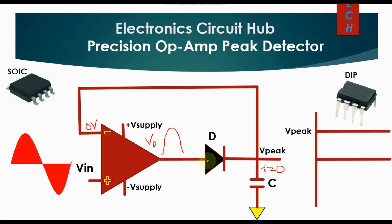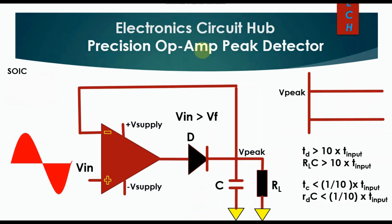This diode conducts and it behaves like a short circuit, and this capacitor will get charged up to V-peak of your input signal. The charging time of this capacitor depends upon RD times C. So the limitation of this circuit is...